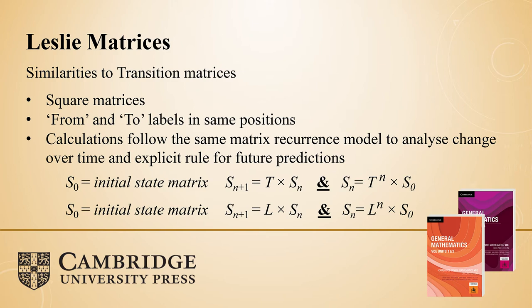Another comfort: the calculations with a Leslie matrix are exactly the same as with transition matrices — both the recurrence relations and the explicit rules. So where you normally go T to the power of n, we then see the same thing with L to the power of n, for whatever time periods we're predicting for in the future.